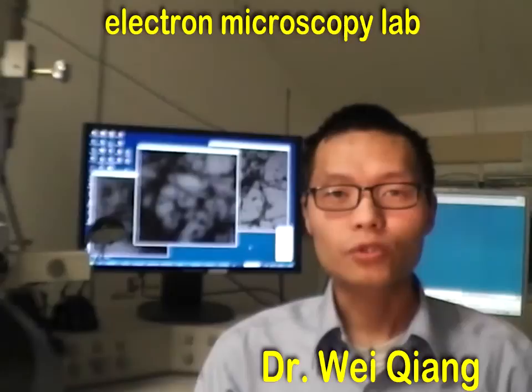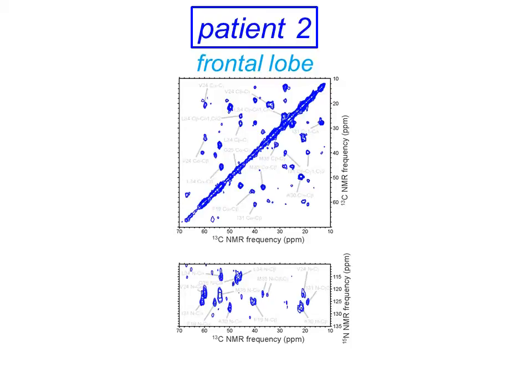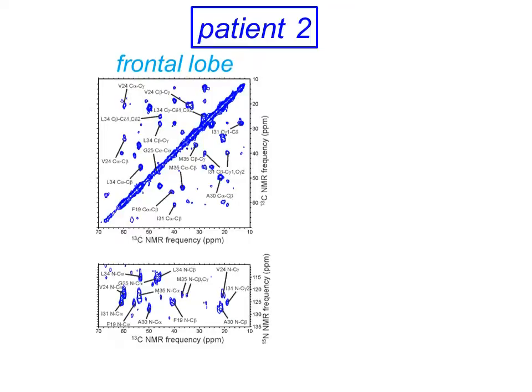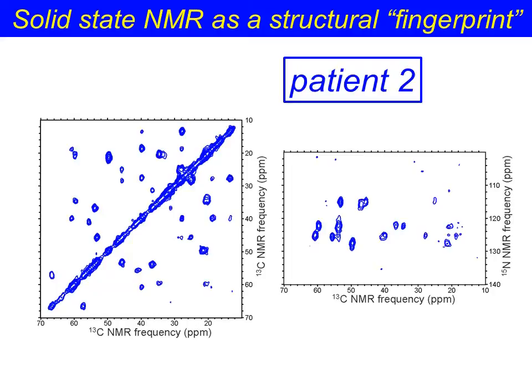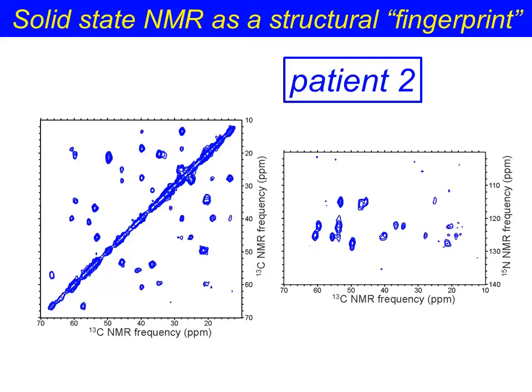We would like to know whether different AD patients developed different A-beta structures in their brains. To start addressing this issue, we performed experiments with tissue from a second patient who died from AD at the age of 80. As with patient 1, two-dimensional solid-state NMR spectra of 40-residue A-beta fibers from patient 2 show a single set of cross-peak signals, with nearly identical spectra for fibers from three different brain regions. However, spectra of fibers from patient 2 are clearly different from spectra of fibers from patient 1. Thus, the two patients apparently developed different A-beta fibrils in their brains.